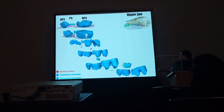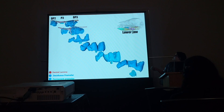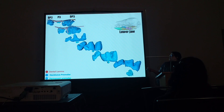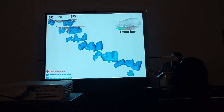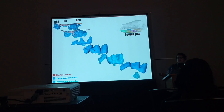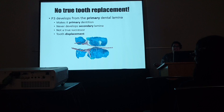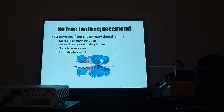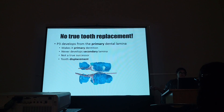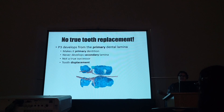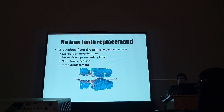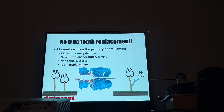Also in the lower jaw, we see exactly the same developmental pattern — the P3 developing from the primary dental lamina, not from a successional lamina, from the tooth that it replaces, all the way through to a mineralized tooth. What this means is that there is actually no true tooth replacement developmentally in the Tamar Wallaby. Because the P3 develops from the primary dental lamina, it makes it primary dentition — the same generation as the other tooth that it replaces. The DP3 never develops that secondary lamina, so the P3 is not a true successor; it's tooth displacement rather than tooth replacement.